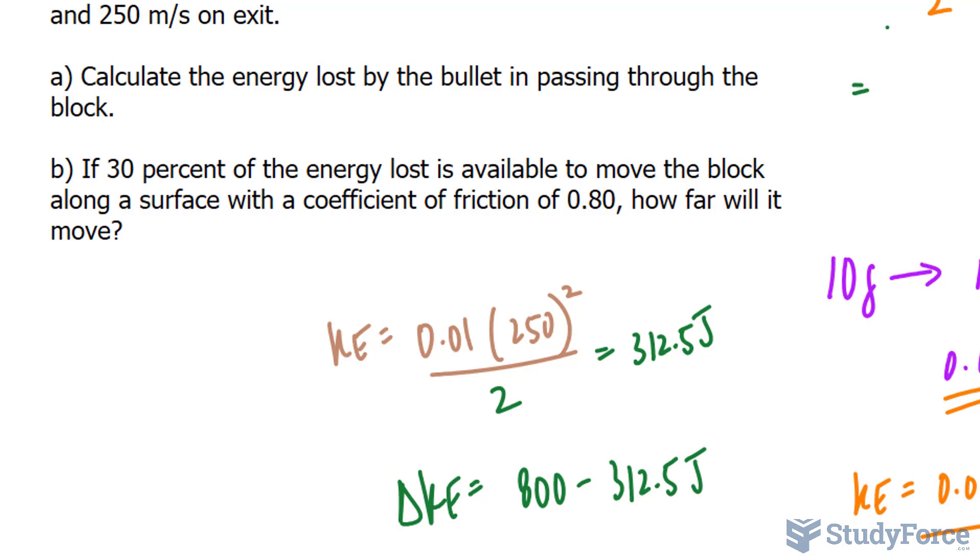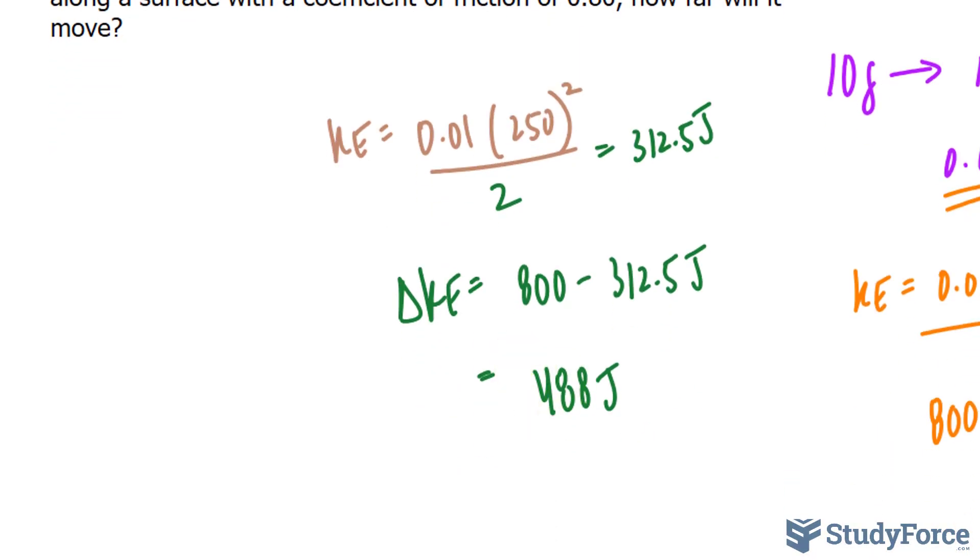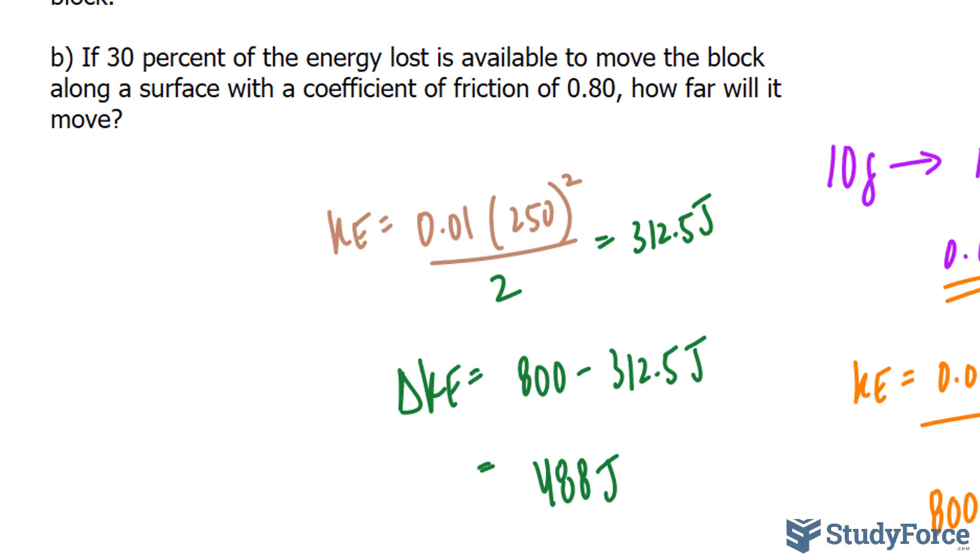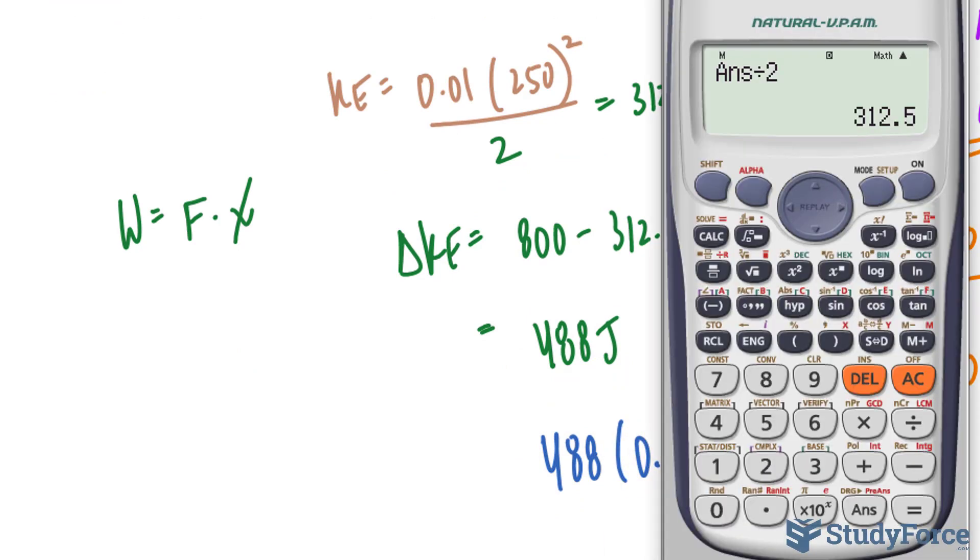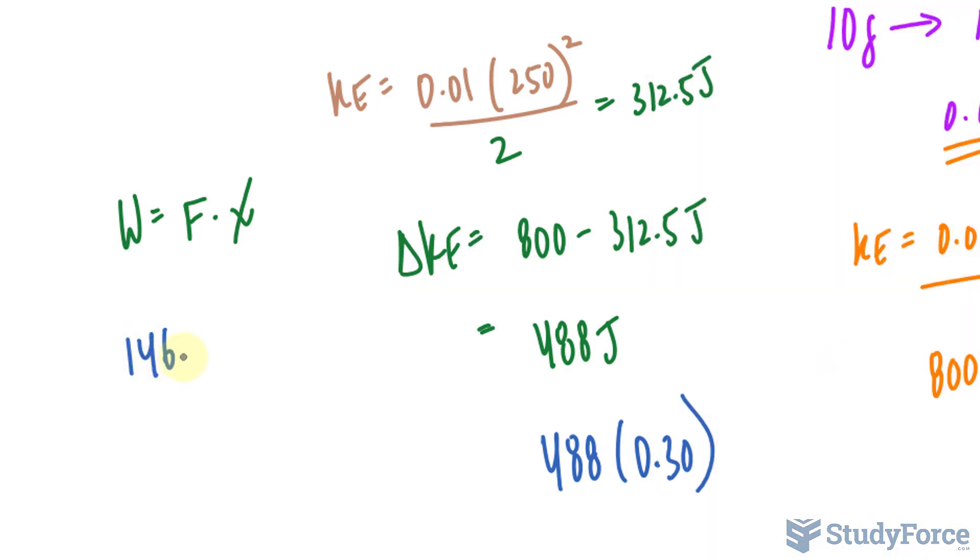To answer question B, if 30% of the energy lost, so 30% of this is available to move the block along a surface with a coefficient of friction of 0.80, how far will it move? To calculate the work associated in pushing this mass, we use the formula work is equal to force times the displacement, which I'll represent as x. They're telling us in the question that 30% of this, so I'll take 488 times 0.30. Let's find out what that is. So 146.4 joules is going to go into moving this mass.